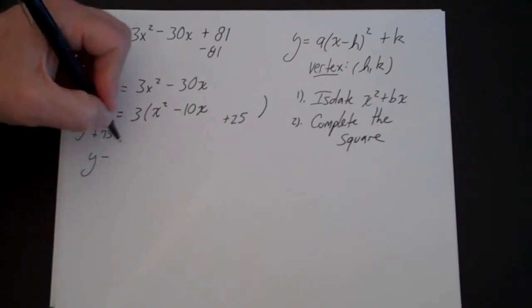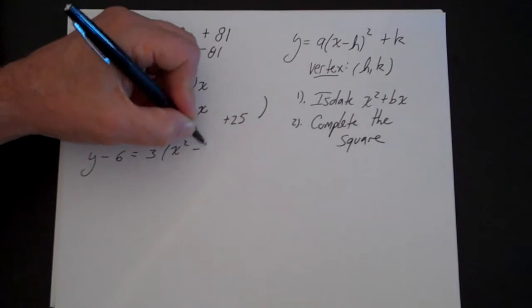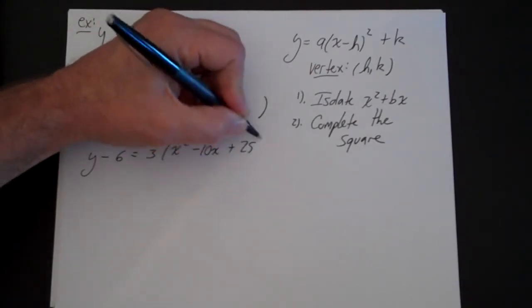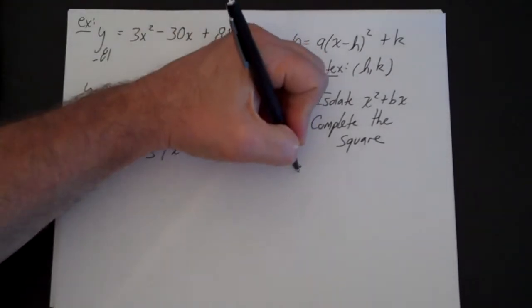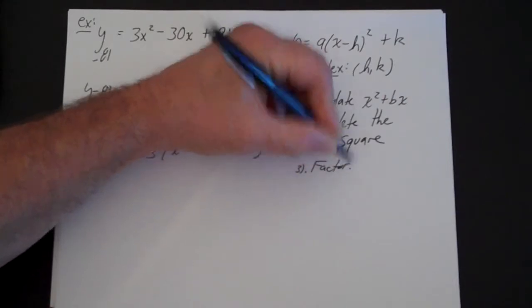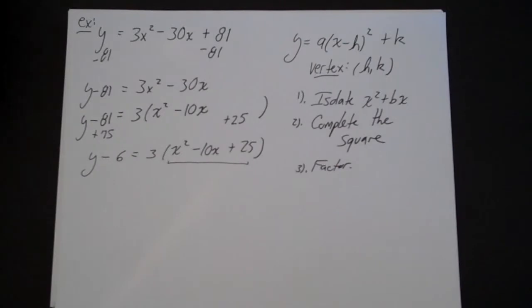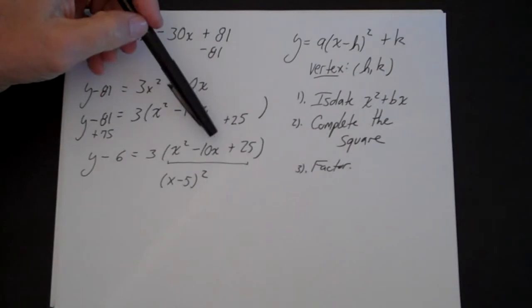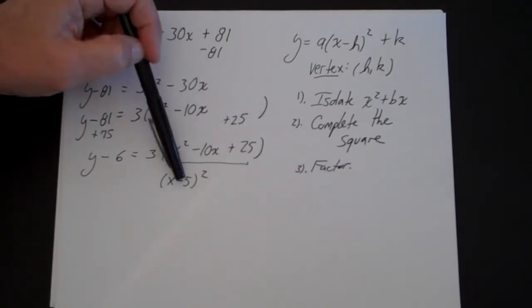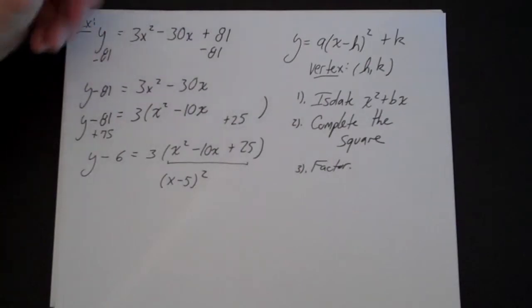And then I'm going to get y minus 6 equals 3 times x squared minus 10x plus 25. And the third step is I'm going to factor. And this term right here will always factor very easily. This is going to be simply x minus 5 squared. So what two numbers multiply to 25 and add to minus 10? Minus 5. Minus 5 plus minus 5 is minus 10. Minus 5 times minus 5 is going to be a positive 25.